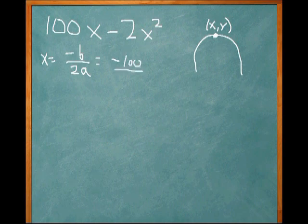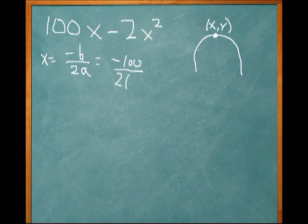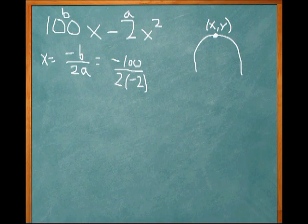So in this problem, negative B is 100 divided by 2 times negative 2. Remember, we get the A from AX squared plus BX plus C. The number in front of the X squared term is A, the number in front of the X term is B, and C is the constant. We don't have a constant here, just zero.